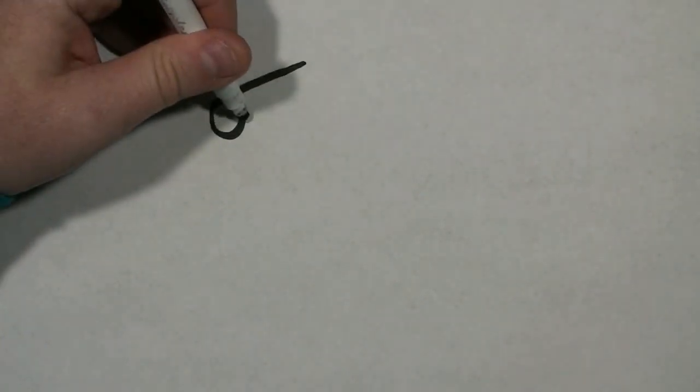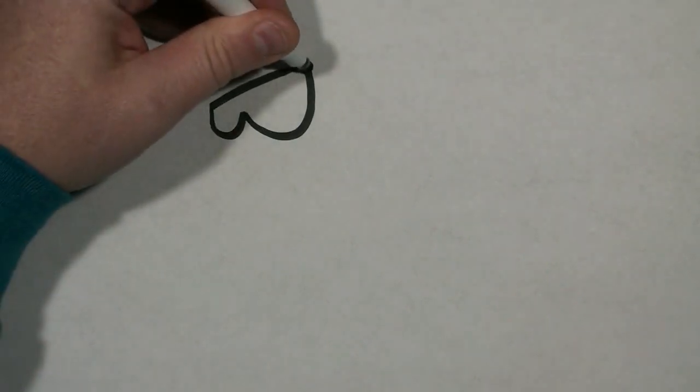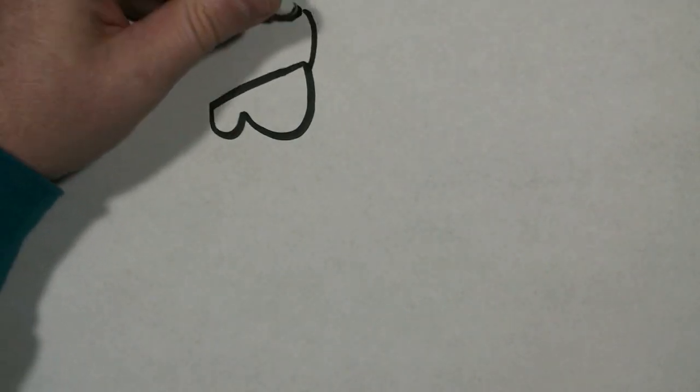I'm going to start here closer to the top of my page and I'm going to draw a short diagonal line that goes slightly down. At the tip I'm going to draw a small u-shape and then connect it to that a much larger one. At the top point I'm going to draw a line that goes up and curves and comes back down to that point.